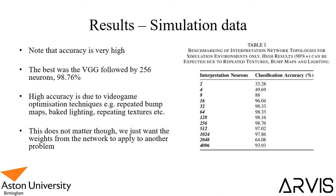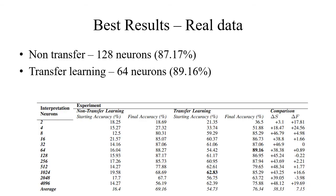The results for simulation data show that the best model was the VGG-16 followed by 256 interpretation neurons, which scored 98.76% classification accuracy. We expect this to be very high because video game environments use repeated bump maps, baked lighting, and repeated textures. This doesn't necessarily matter because we just want to take those weights and apply them to another problem. For classifying real data without transfer learning, the best result was VGG followed by 128 interpretation neurons scoring 87.17% accuracy. But the best transfer learning model was VGG followed by 64 interpretation neurons, scoring 89.16% — an improvement of just under two percent.